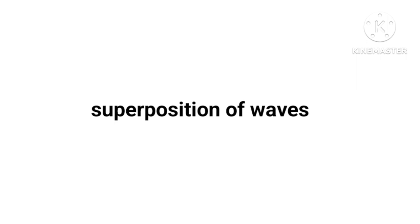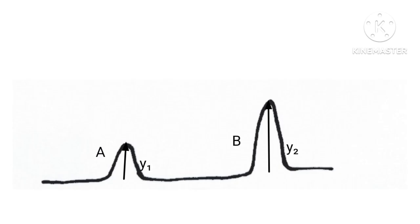In our last video we have learnt about waves. Now we shall try to study what happens when two wave pulses A and B traveling in opposite directions crosses each other.